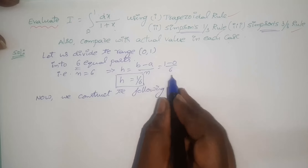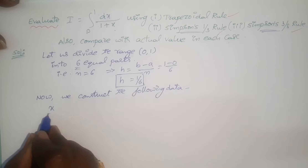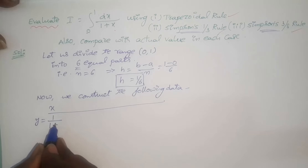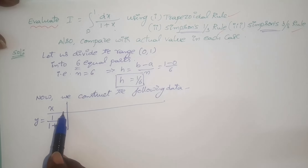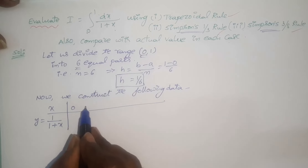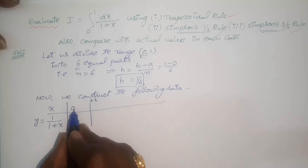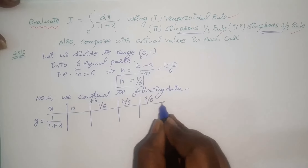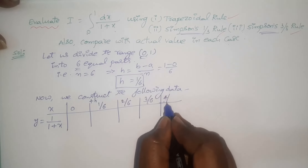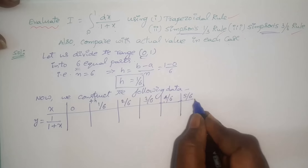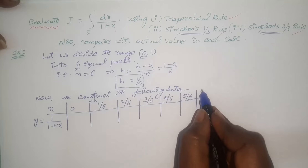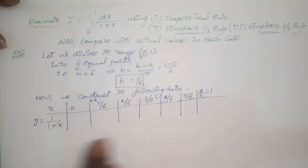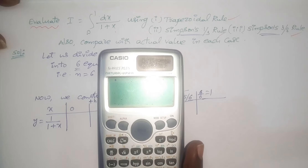With the step size and the range we can construct the data table. The x values and respective y values: the given function is 1 by 1 plus x. Start x values at the lower limit 0, then add h each time: 0, 1/6, 2/6, 3/6, 4/6, 5/6, 6/6 which is 1. Do not reduce the x values to decimal places.